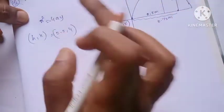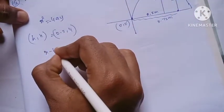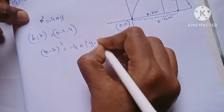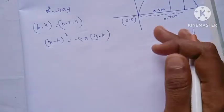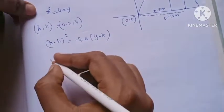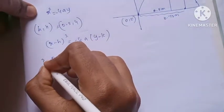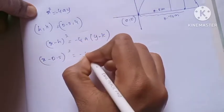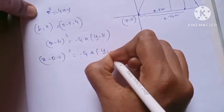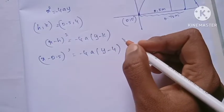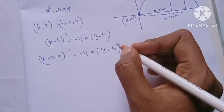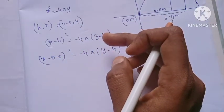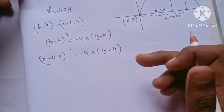The parabola equation is of the form: x minus 0.5, whole square, equals minus 4a into y minus 4. We need to find the value of 'a'. So first, let us find the value of 'a'.